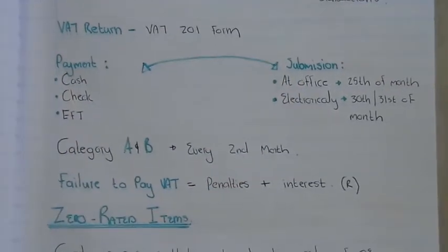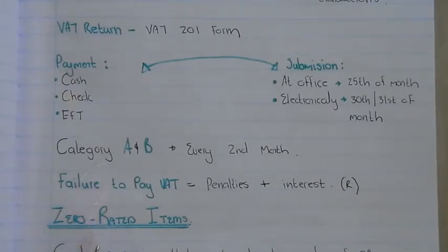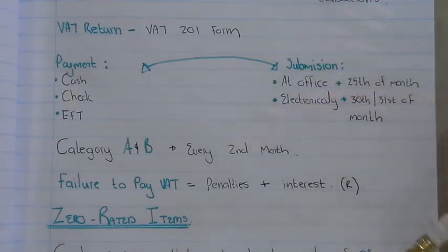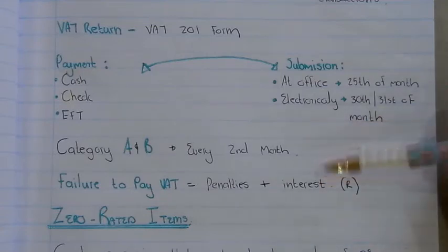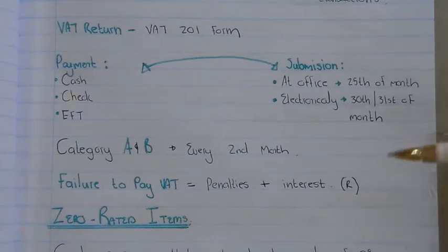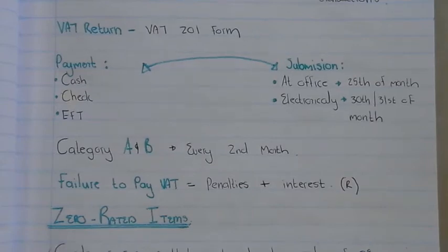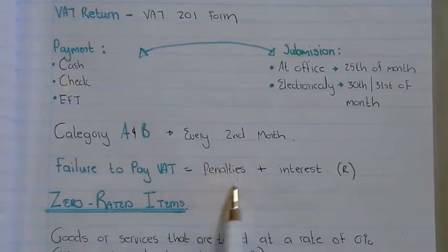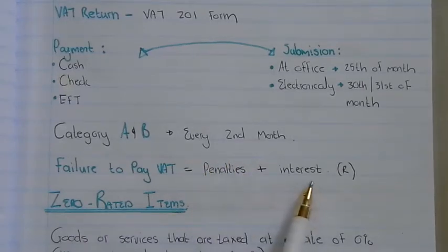For category A and B VAT, you fill in and submit your VAT form every second month. There are different categories — for example, farmers may only submit VAT every six months depending on the type of farming. If you fail to pay your VAT or submit your form, penalties can be charged, and interest will also be charged on top of those penalties.